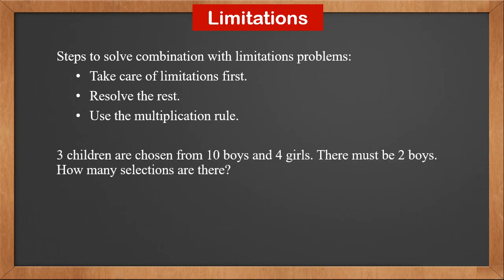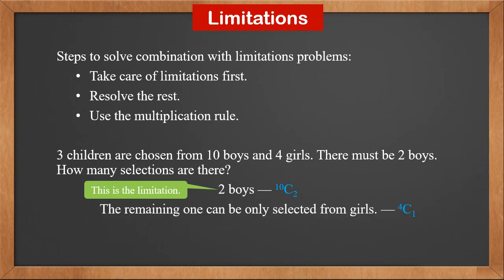Let's look at an example. 3 children are chosen from 10 boys and 4 girls, and there must be 2 boys. How many selections are there? The limitation here is 2 boys, so we select 2 boys first — this is 10C2. After 2 boys are selected, the remaining 1 can only be selected from the 4 girls — this is 4C1. So the answer is 10C2 × 4C1, which is 180.